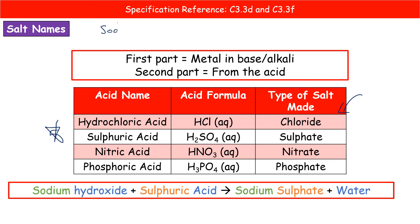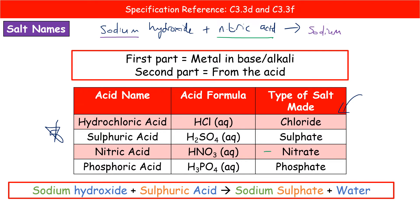When writing the name of a salt it has a two-part name. For example, sodium hydroxide reacting with nitric acid: write the metal name first — sodium — then the ending comes from the acid. Nitric acid always makes nitrate, so the salt is sodium nitrate. You then also write that we make water. However they phrase it, it's always: metal name first, then look at the acid to get your ending.